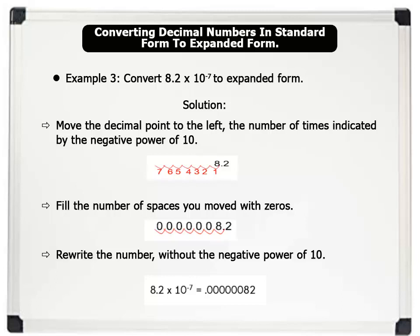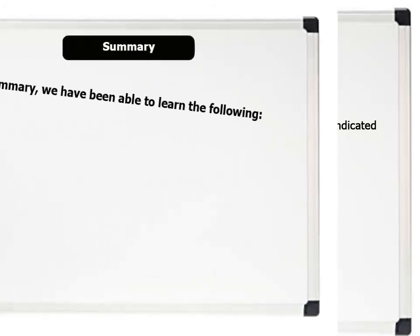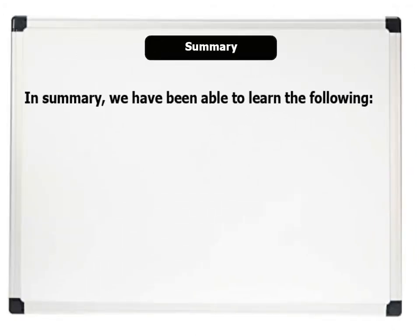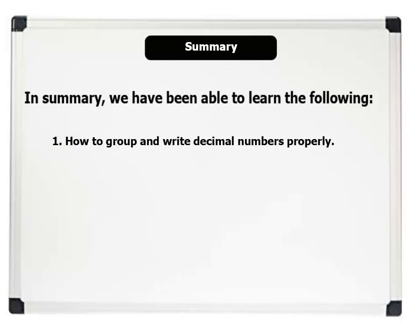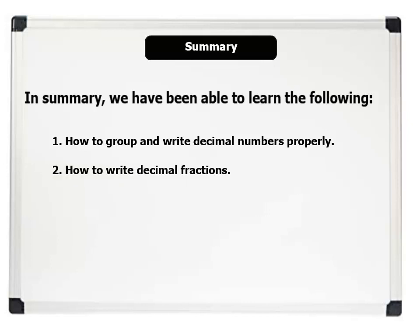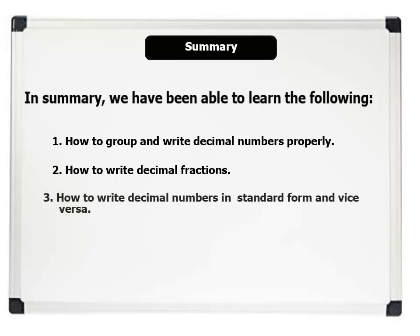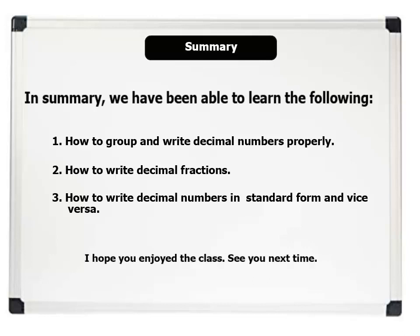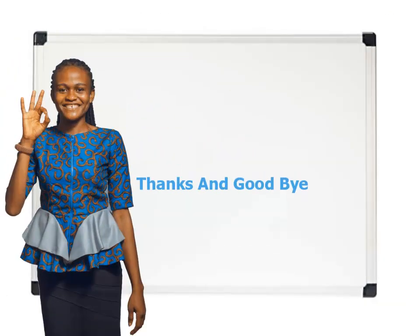Let us now summarize. In summary, we have been able to learn the following in this lesson: 1. How to group and write decimal numbers properly. 2. How to write decimal fractions. And 3. How to write decimal numbers in standard form and vice versa. I hope you enjoyed the class. See you in the next lesson. Thanks and goodbye.